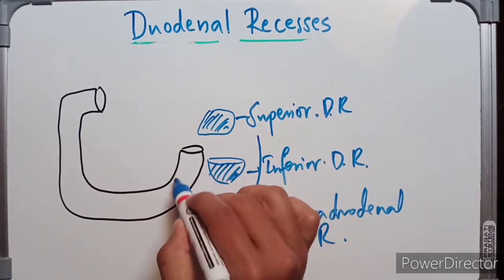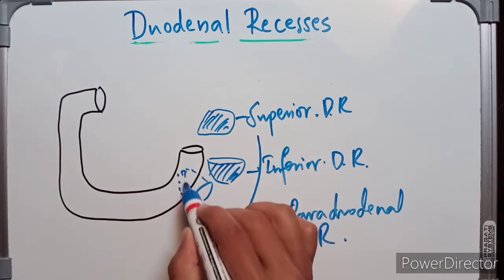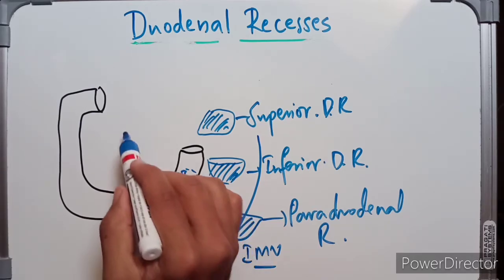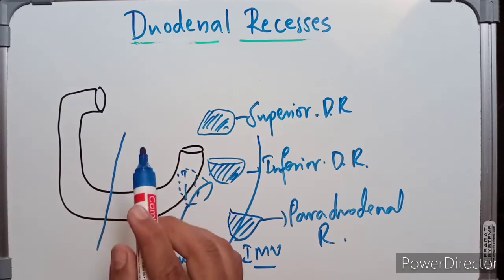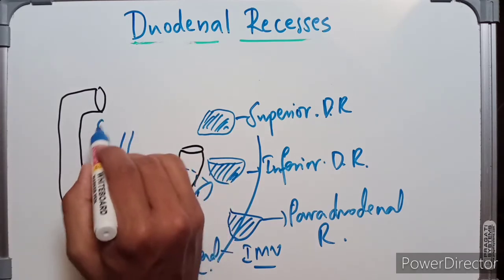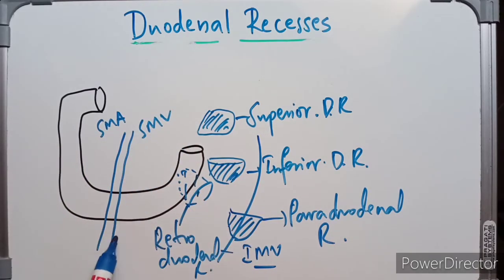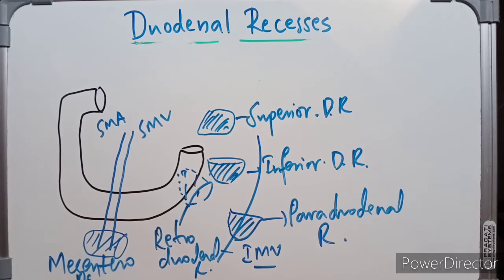Behind the duodenum is the retroduodenal recess. The mesenteroparietal recess is situated behind the superior mesenteric artery and the superior mesenteric vein, just below these vessels.